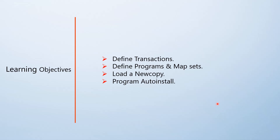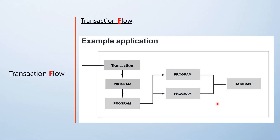This is a general transaction flow diagram wherein any example application starts with the transaction. The transaction triggers the initial program, and that program can in turn call multiple set of programs. In case data is required, it can reach to a database, a VSAM file, or wherever you store your data. So this is a sample transaction flow — an application is altogether made of a bunch of programs and it's invoked by a transaction.